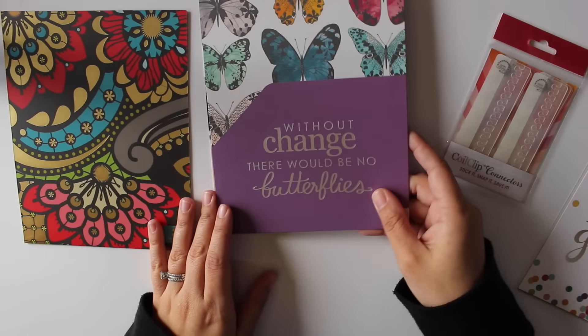And those came with the new coil clip connectors. Let me show you what the original coil clips look like versus a coil clip connector. So you can see that the little teeth are a little bit different than on the original coil clips. They're a lot smaller. And the actual clip itself is a lot longer. It's about double the size of the current Erin Condren coil clips.